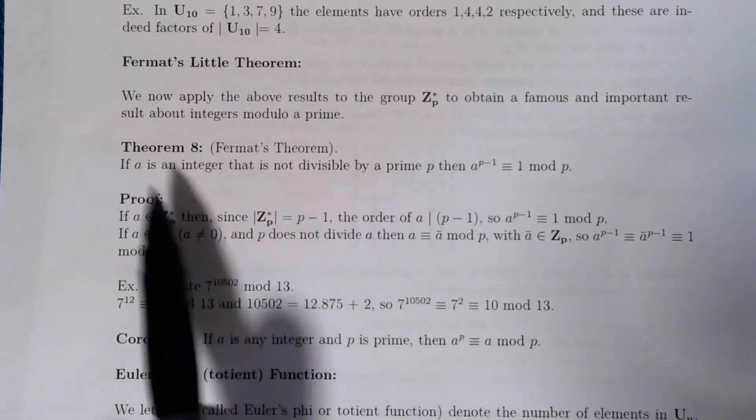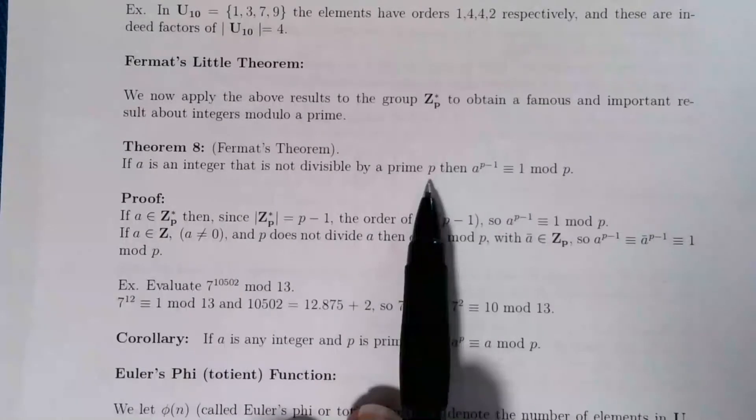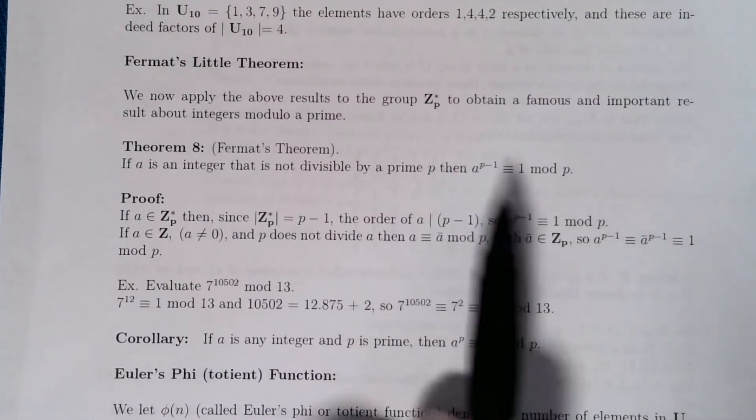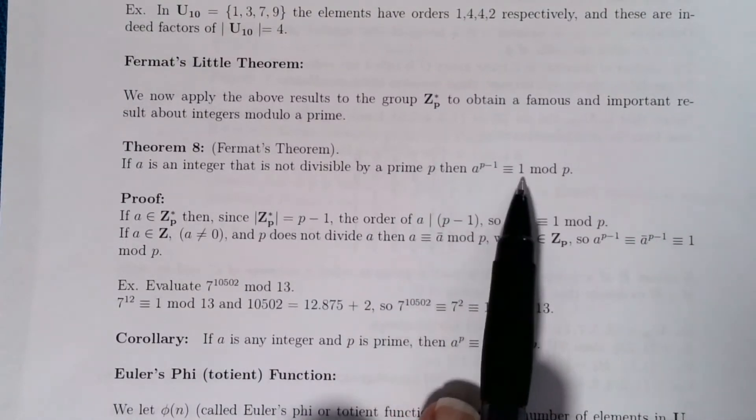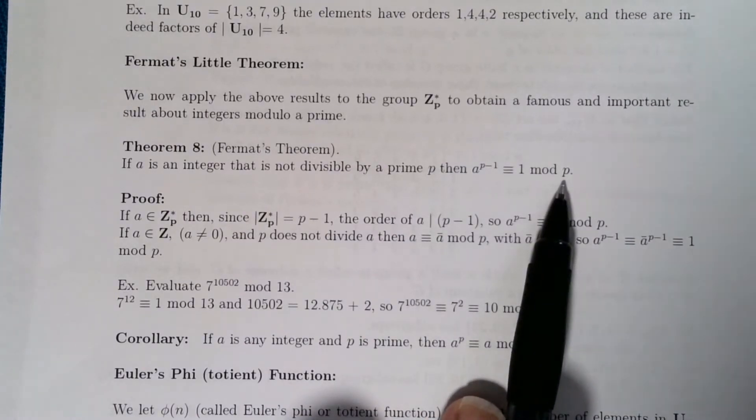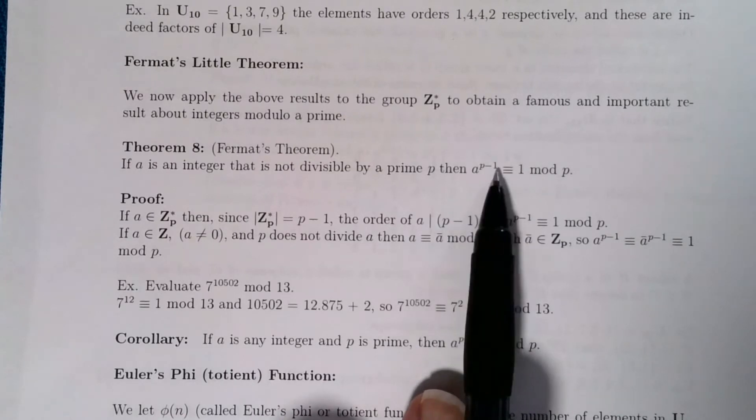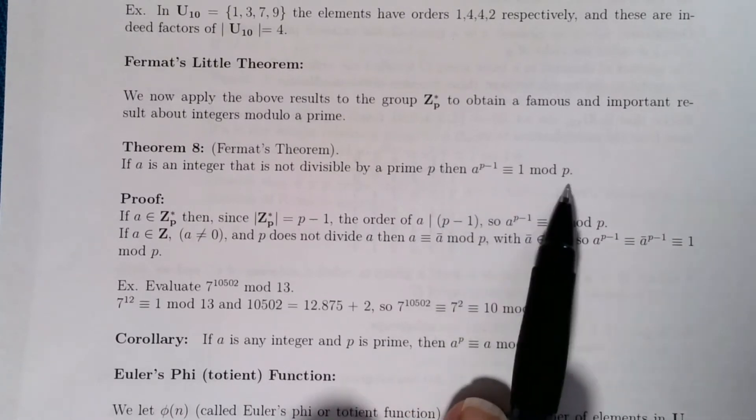Here's the theorem. It says if a is an integer that's not divisible by prime p, then a^(p-1) is congruent to 1 mod p. So you're given a prime p, take any integer that is not divisible by that prime p, and then when you raise a to the power p-1 you always get 1 modulo p.